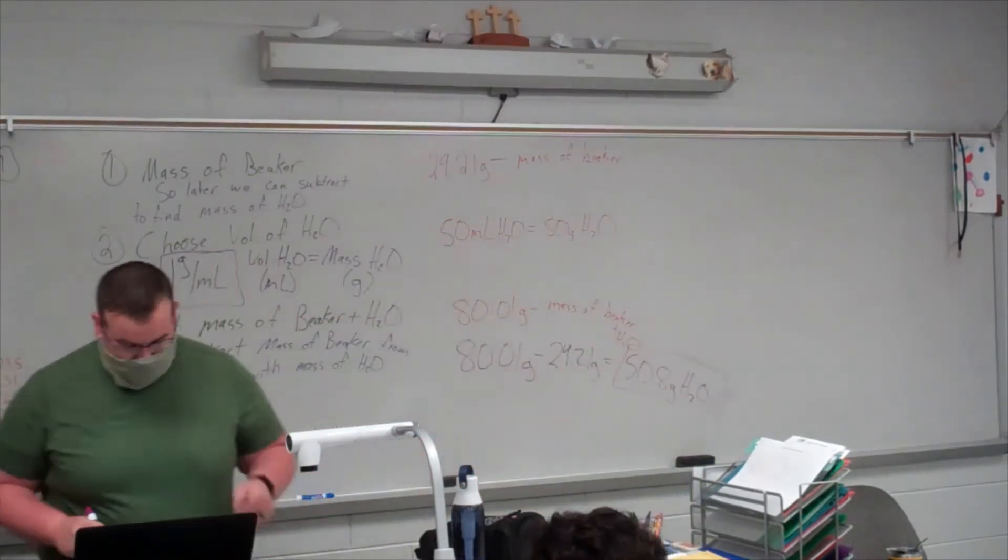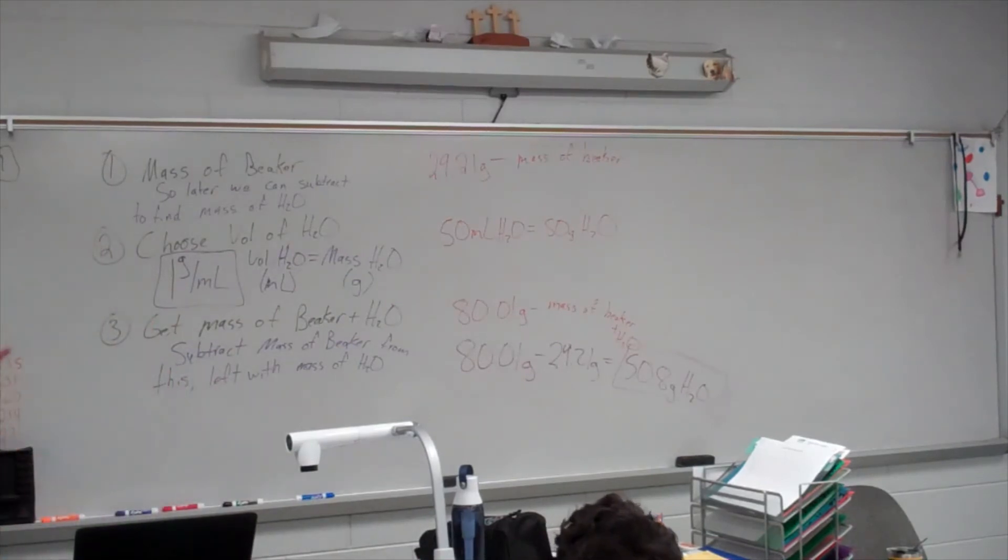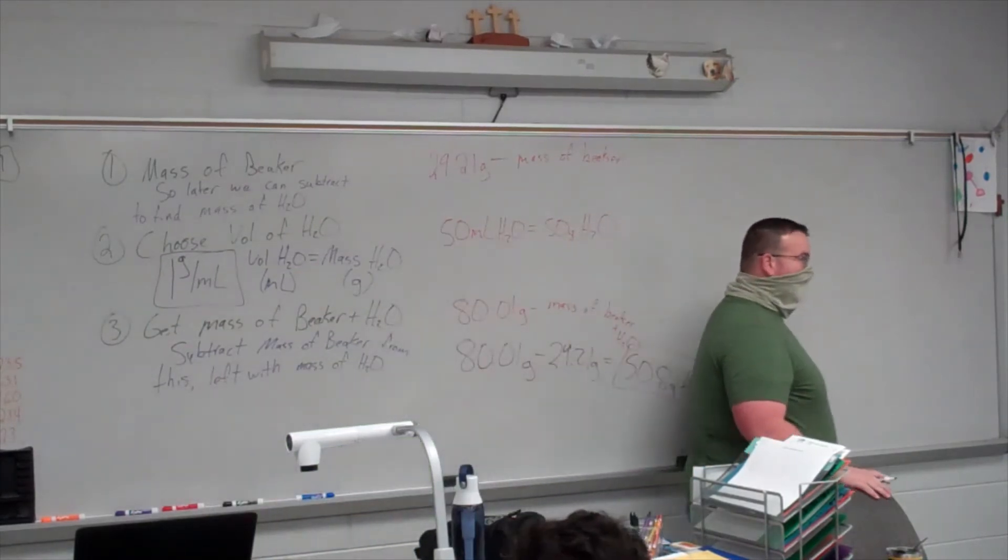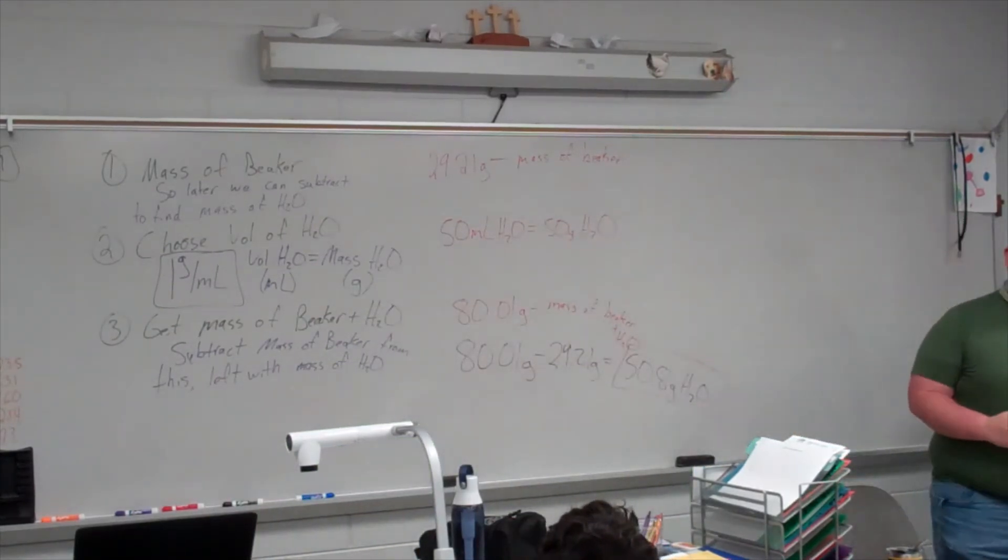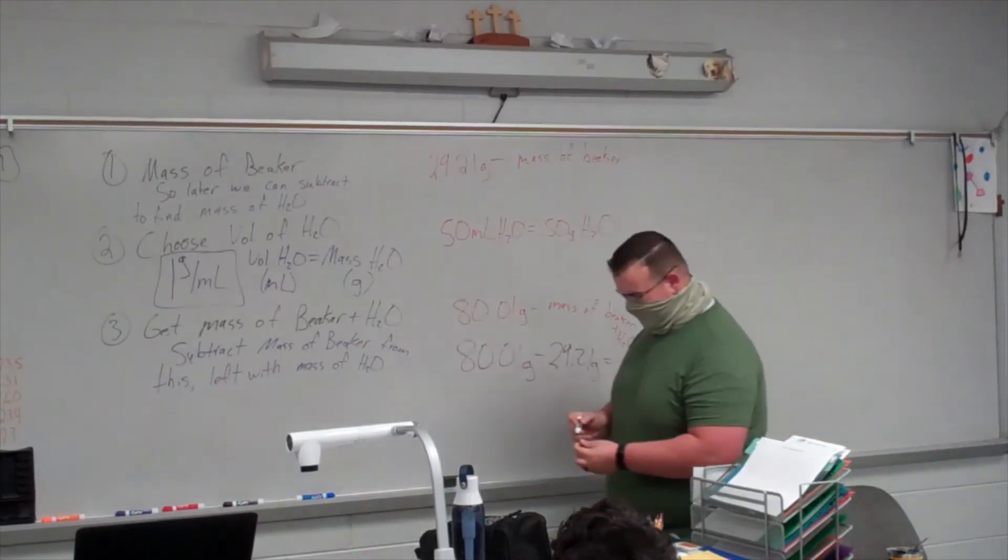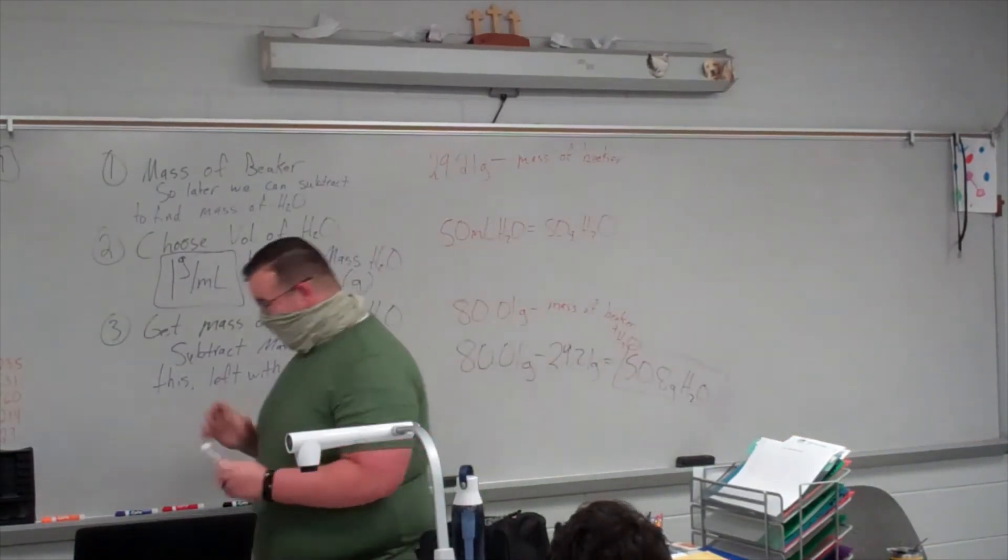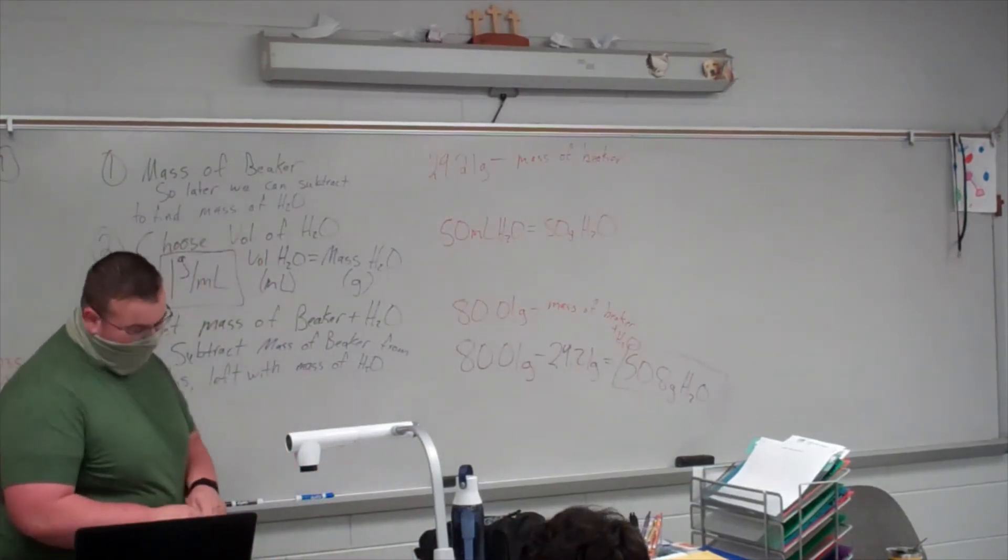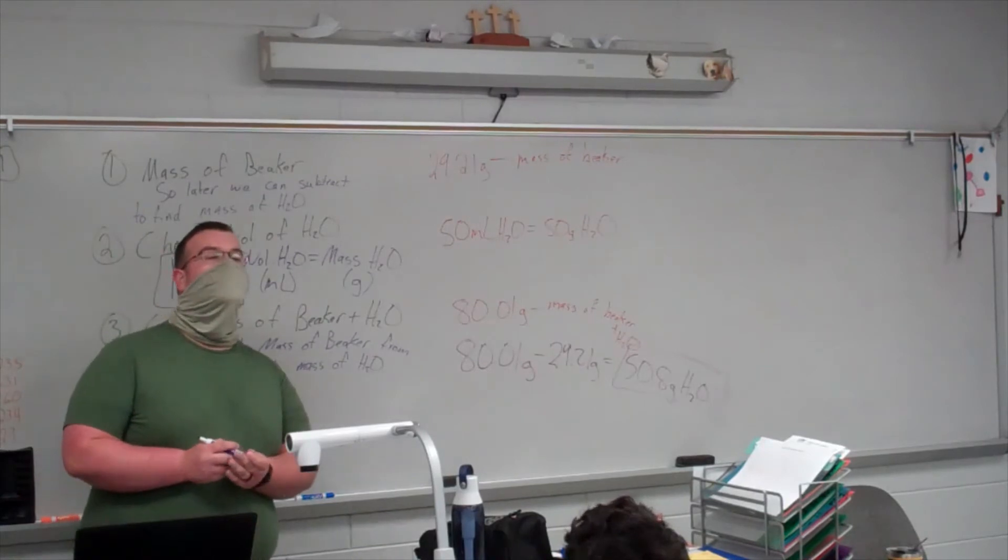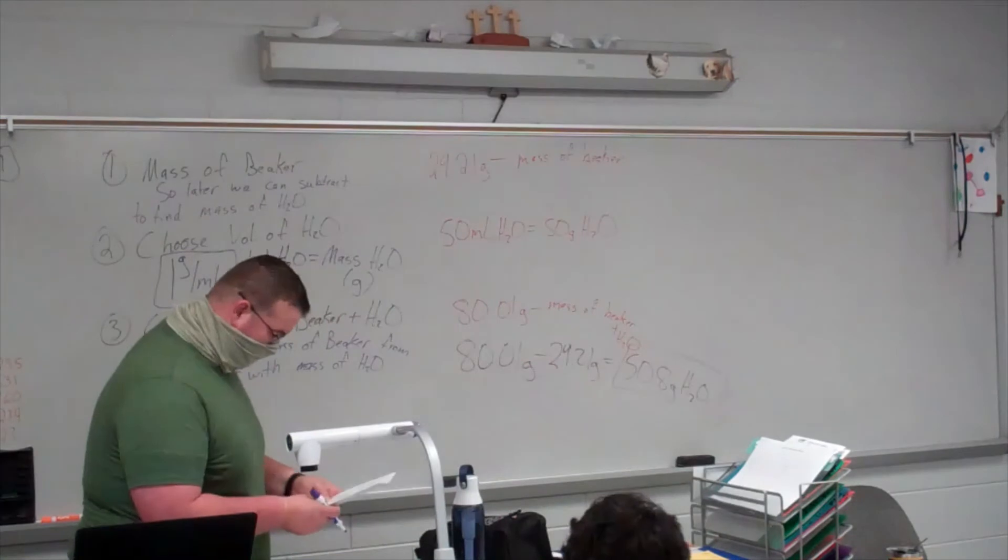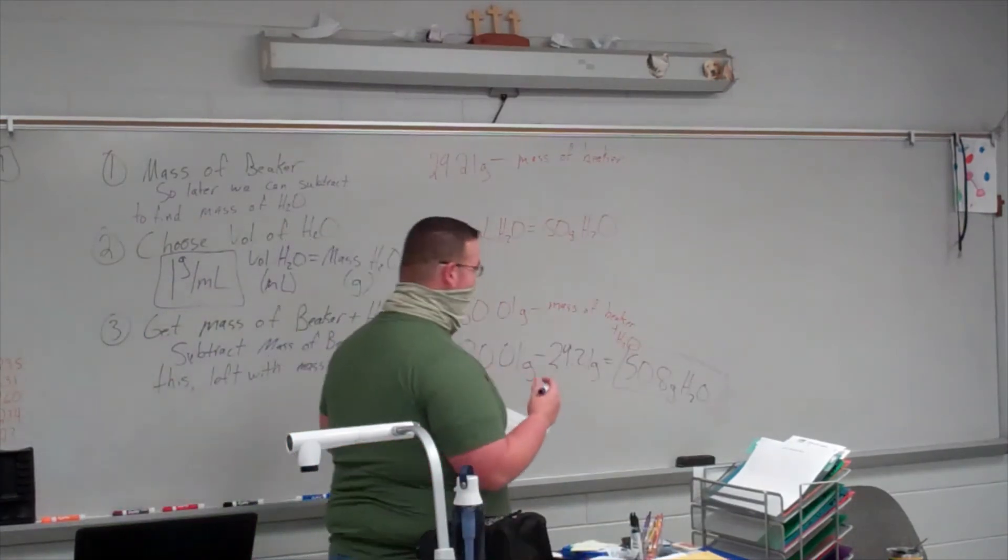So if I want to get the mass of water what am I going to do? Subtract what? What's my first number? Well, you have to subtract 80.01 grams. Oh there we go. Come on now. Yeah. Grams because you know units matter, right? Minus what? 29.21 grams. 29.21 grams.